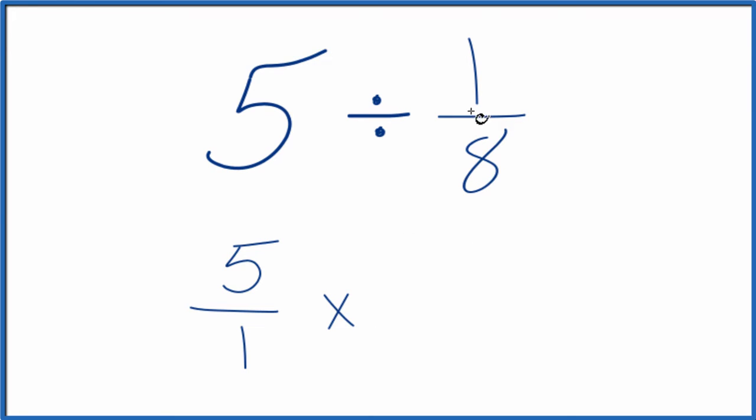To take the reciprocal of a fraction, you move the numerator to the bottom and the denominator to the top. So we have 8 over 1. 8 over 1 is the reciprocal of 1 eighth.